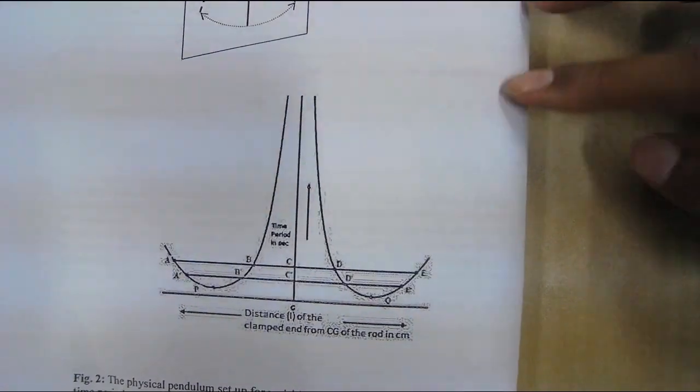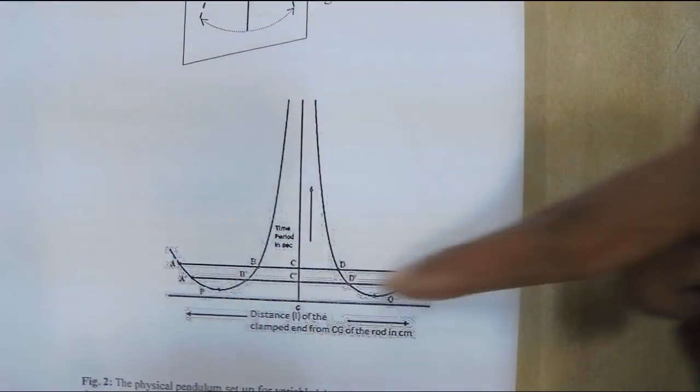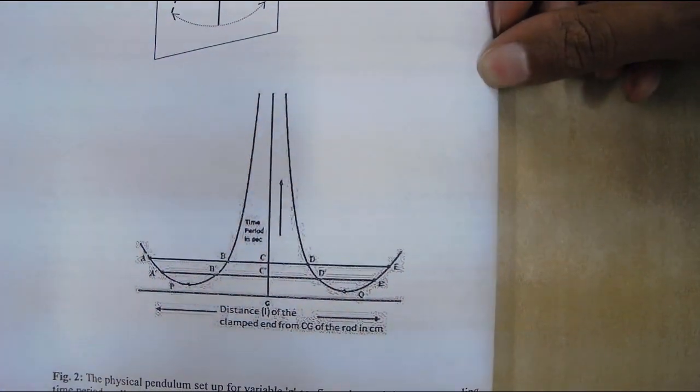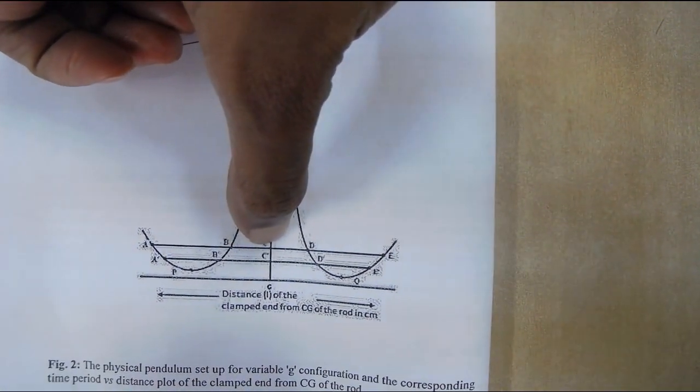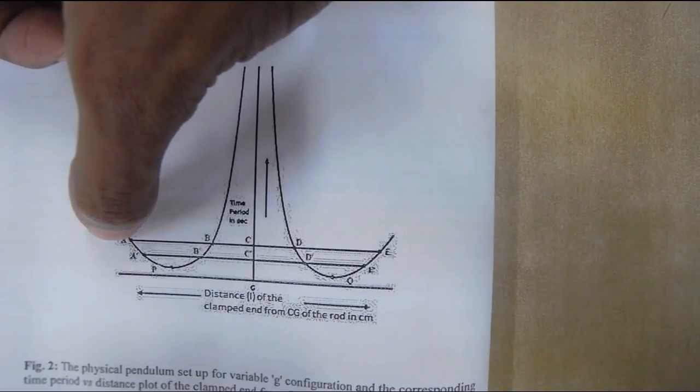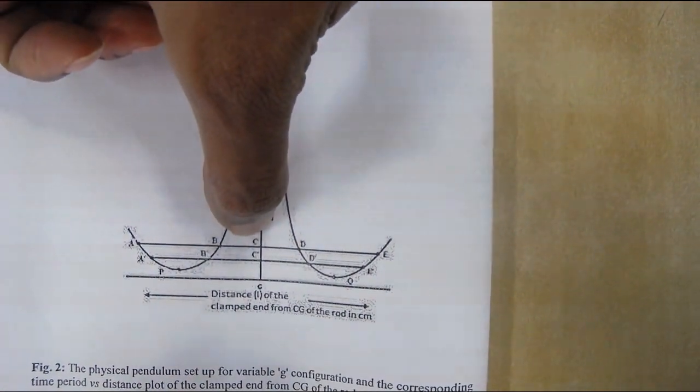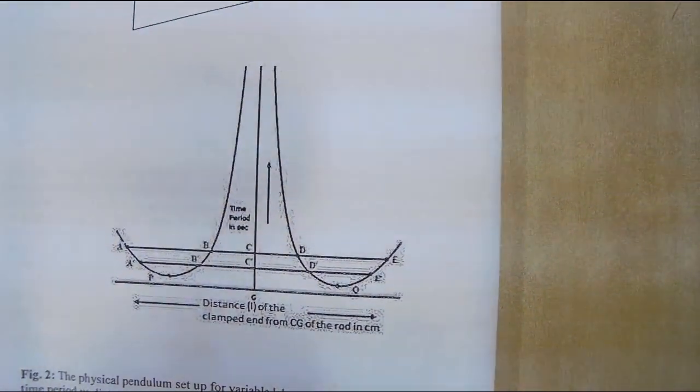Now draw several lines parallel to x-axis and intersecting two points on the curve. For each of these lines find the length of equivalent simple pendulum and radius of gyration as described in the manual.